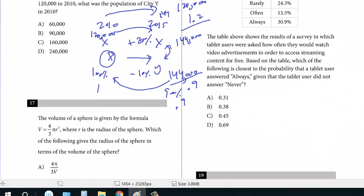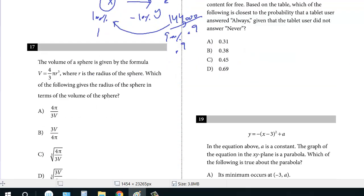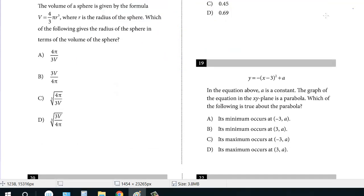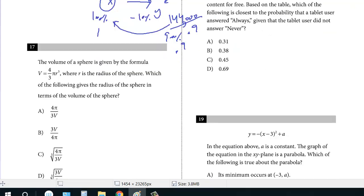Let's continue. We're going to do number 17 now. The volume of a sphere is given by the formula V = 4/3πr³. This is given at the end of the section. You should know this formula, where R is the radius of the sphere. Which of the following gives the radius of the sphere in terms of the volume? Whenever you see 'in terms of,' whatever is to the left, you're isolating that variable.